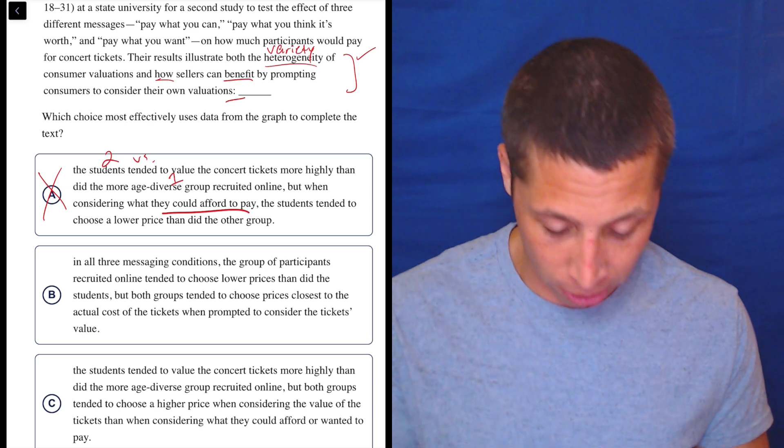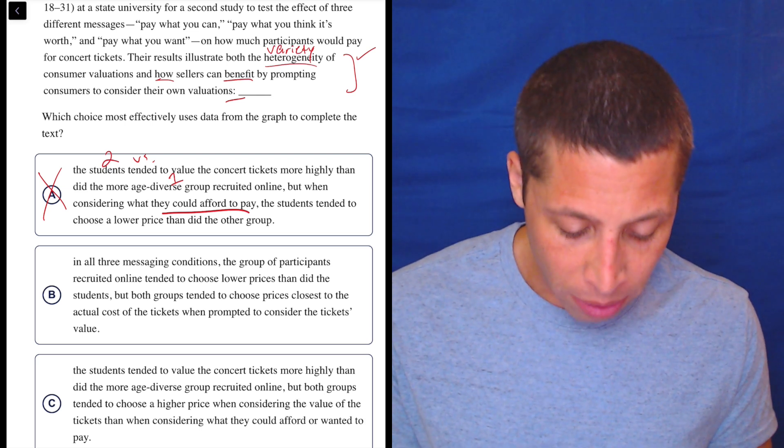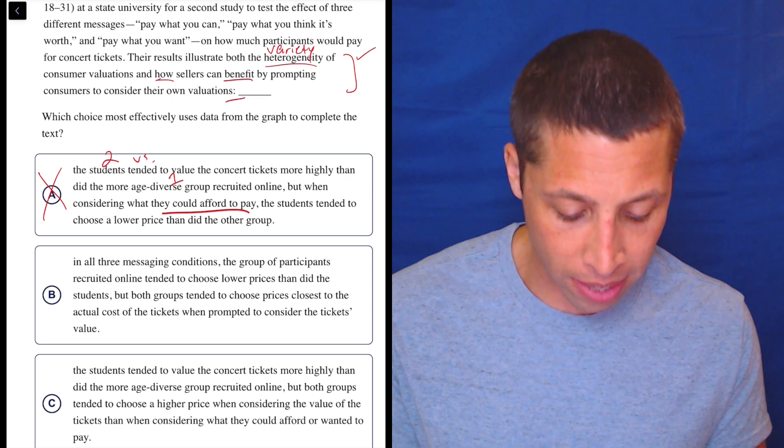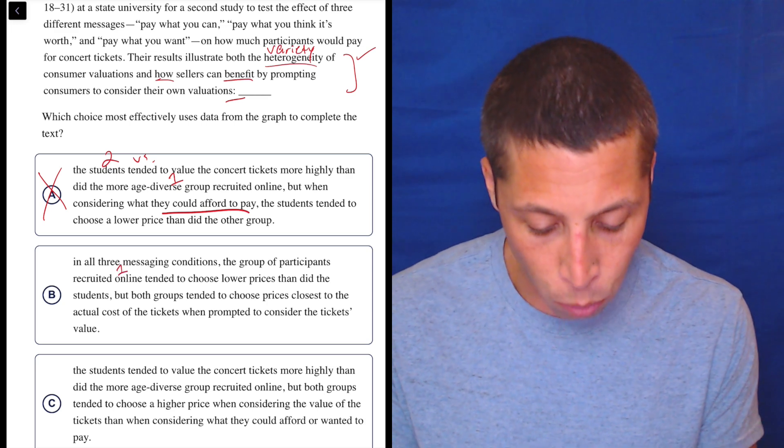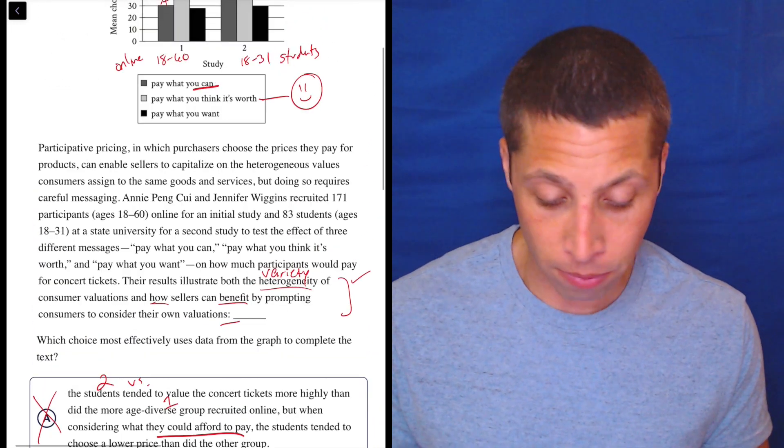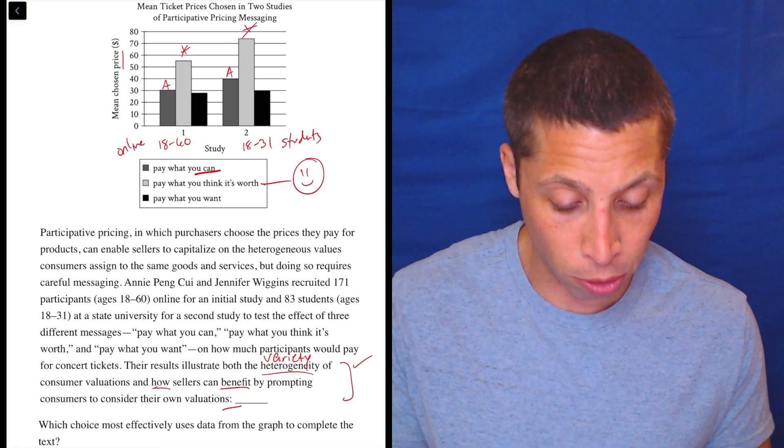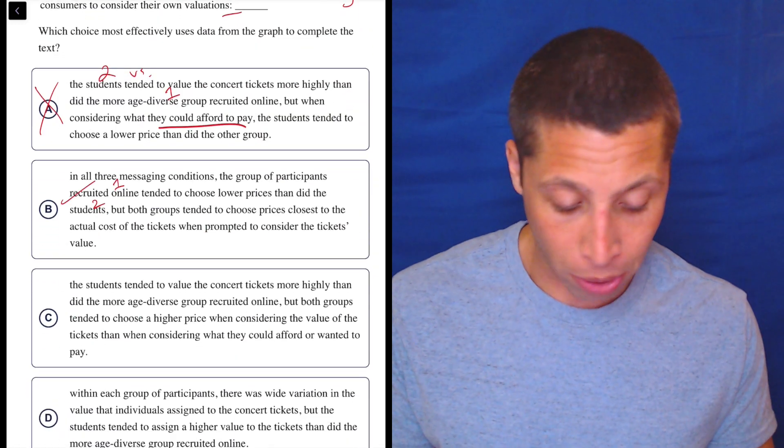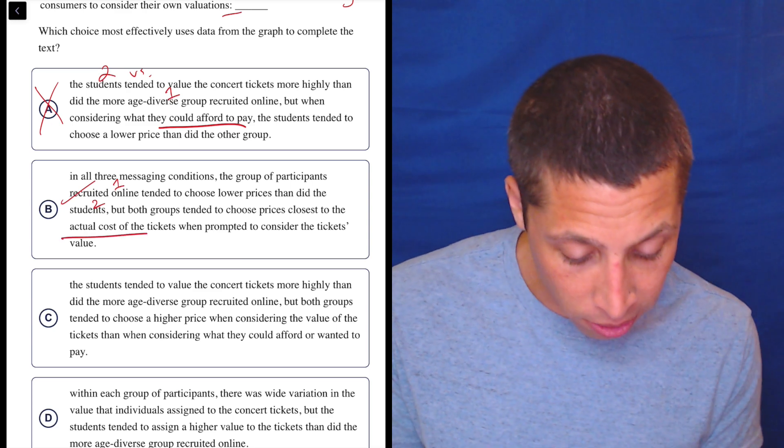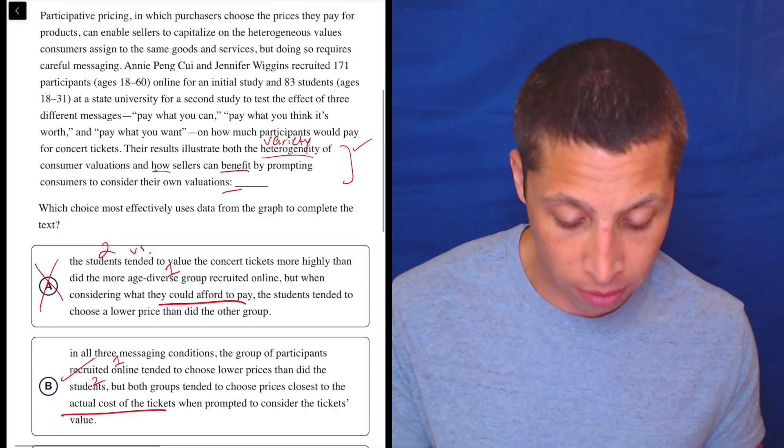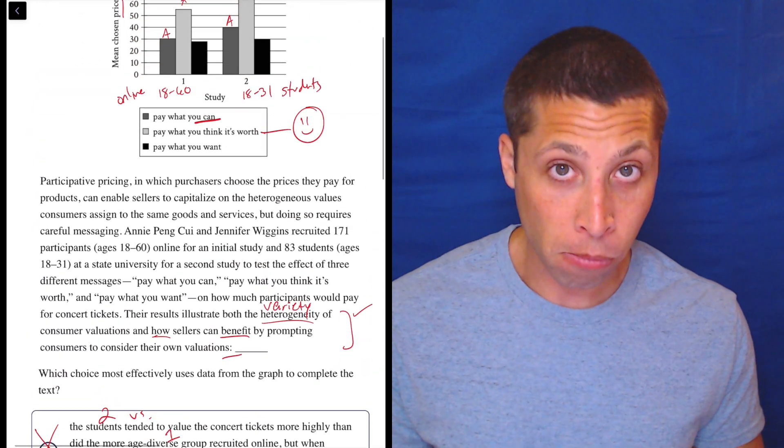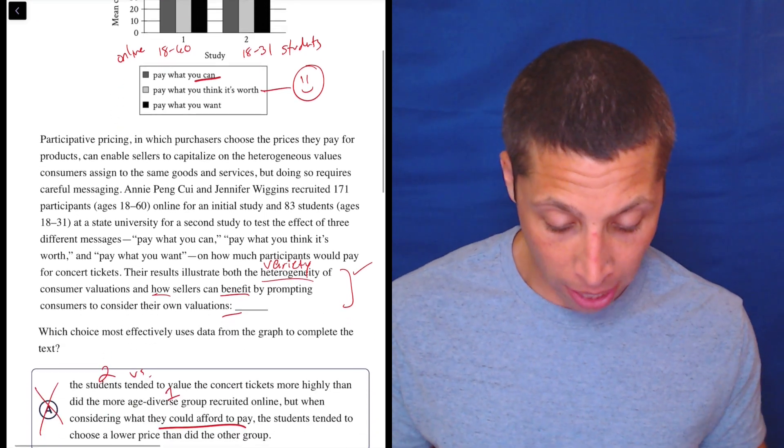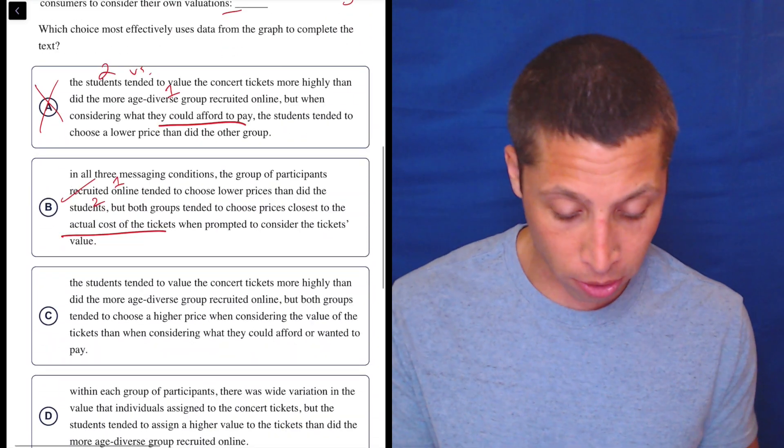But let's move on. Let's look at two. B. In all three messaging conditions, the group of participants recruited online tended to choose lower prices than did the students. So, again, that's one versus two. And, yes, the group one is lower than group two. So, that seems right. But both groups tended to choose prices closest to the actual cost of the tickets when prompted to consider the ticket's value. Hmm. What's the actual cost? Do I know? I don't think so. What's the actual cost? I have no idea.